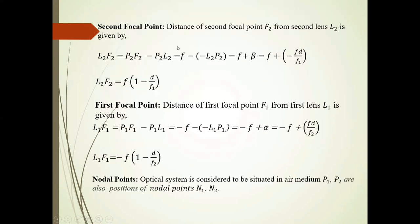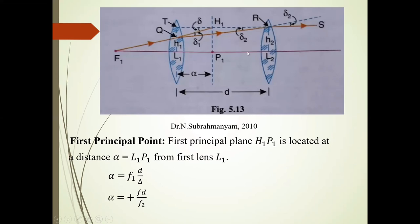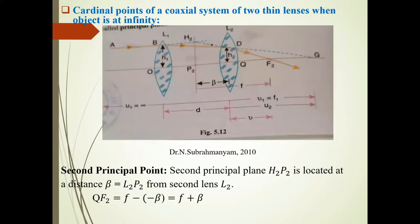The second focal point, the distance of second focal point F2 from lens L2. See here in the diagram, this L2 lens and this focal point F2. Distance from the second lens to F2 is,